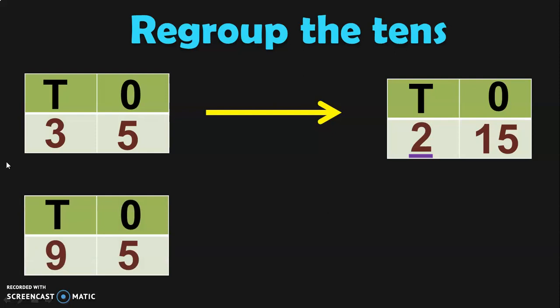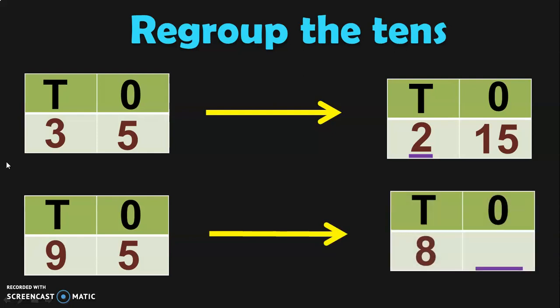The next example: nine tens and five ones can be regrouped as eight tens and how many ones? Nine tens can be regrouped as eight tens, and that one ten, or ten ones, will be taken to the ones place. So now in the ones place, you will get fifteen ones.